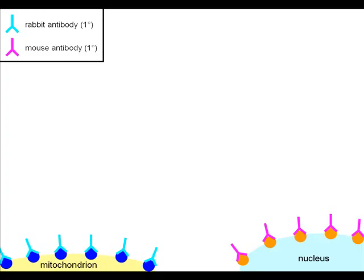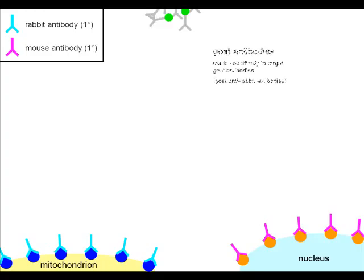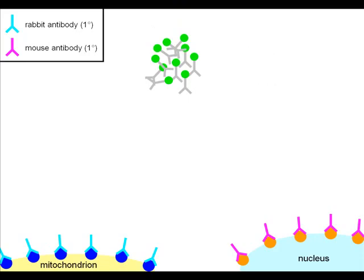We've chosen to make the secondary antibody in goats. Here are goat anti-rabbit antibodies, that is, goat antibodies that attach to rabbit antibodies only.